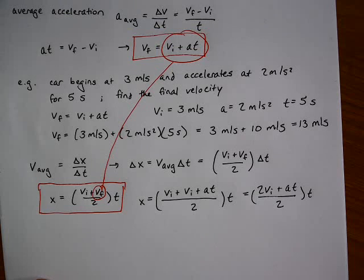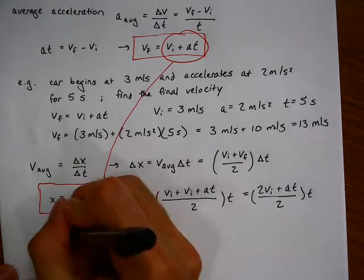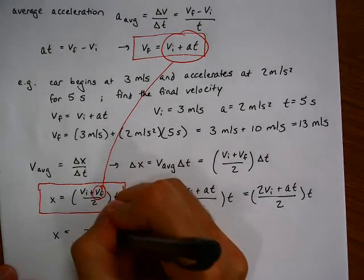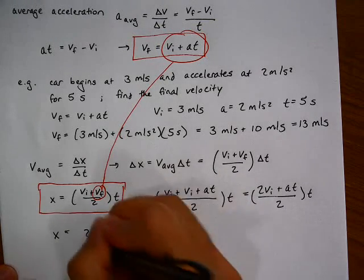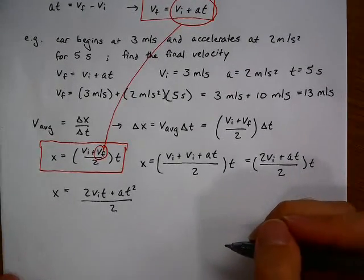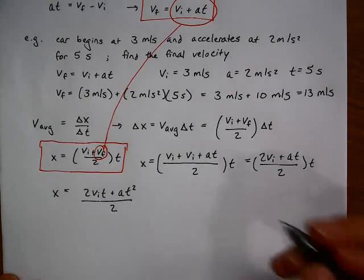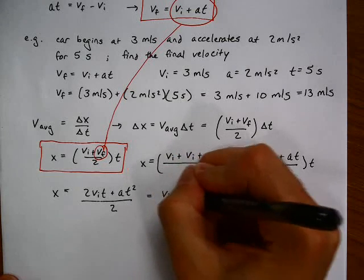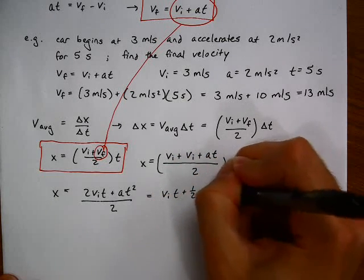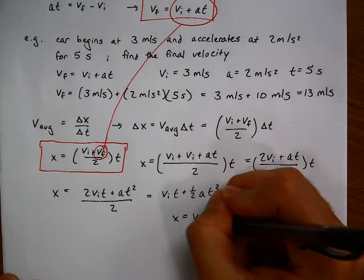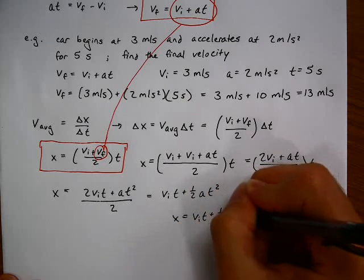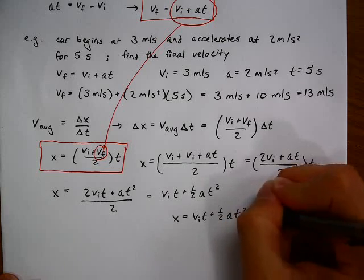This is our first step. Vi plus Vi is 2Vi. This is the second step. We now multiply through by t and we simplify. This is the third kinematic equation: x equals initial velocity times time plus one half acceleration times time squared.